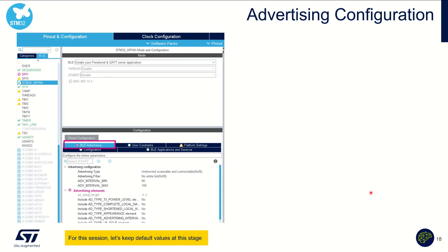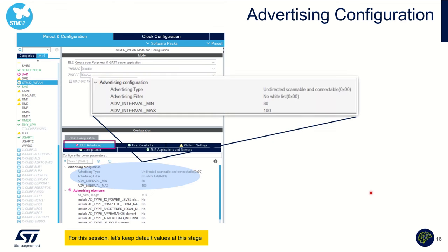Now let's move to BLE configuration. I want to initialize the BLE advertising settings. The first step before being able to connect is advertising — I want to be discoverable. In advertising configuration, I can set different settings: the advertising type (meaning connectable or not), whether to use a whitelist, and the advertising interval defined with a min and max, giving flexibility to the stack for multi-slot use cases.